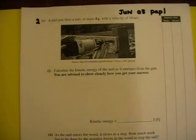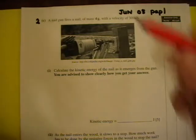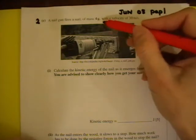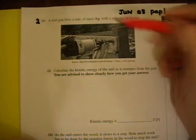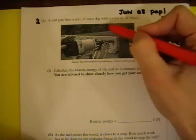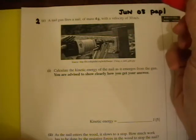A nail gun fires a nail of mass 4 grams. Hopefully you can see 4 grams - this isn't bold, and that means you're going to have to change that into kilograms. So 4 grams has to be changed into kilograms.